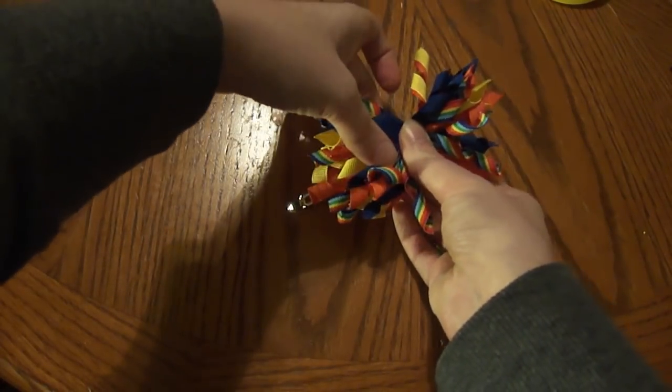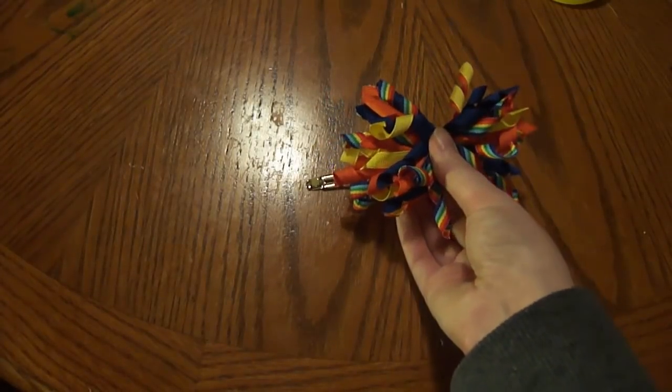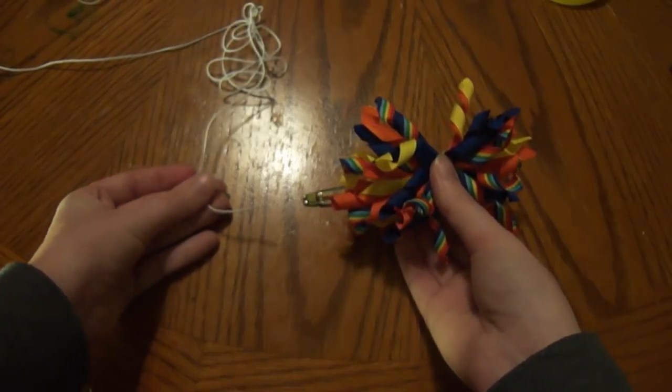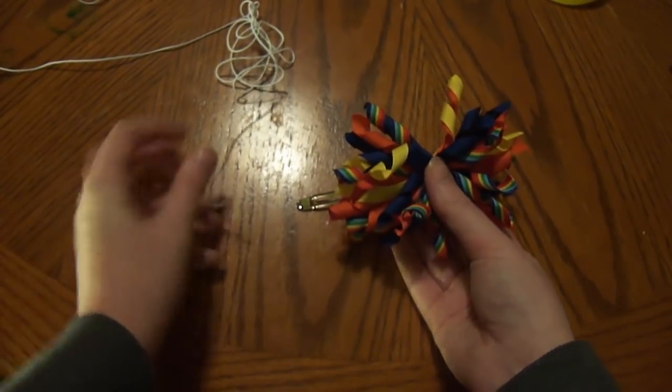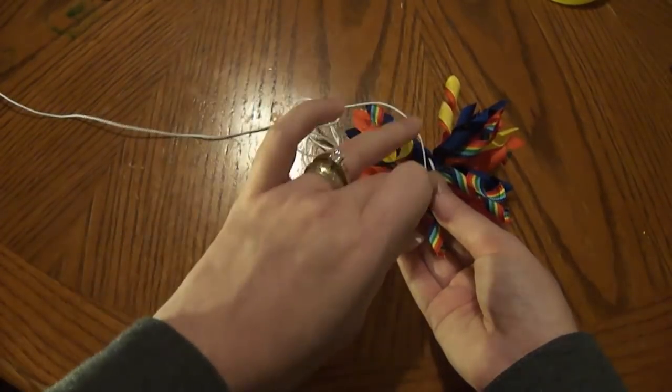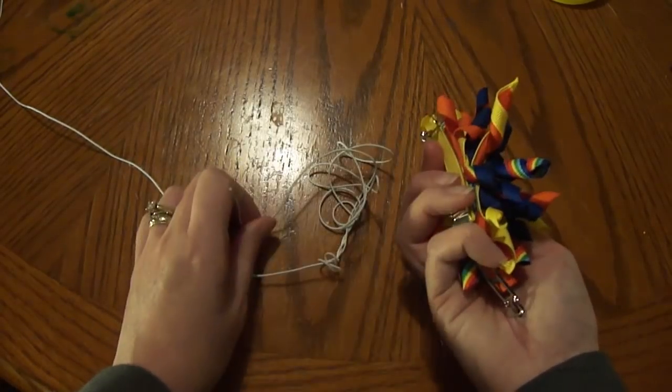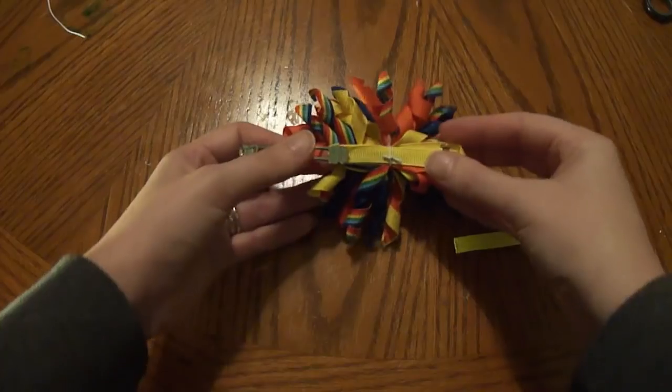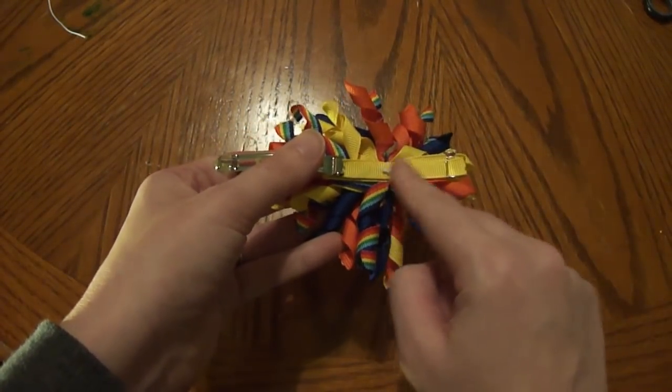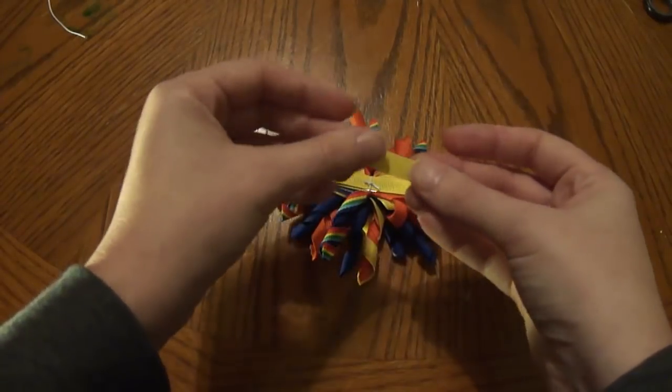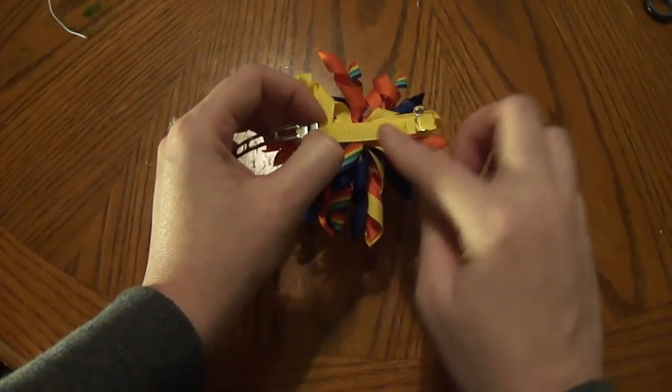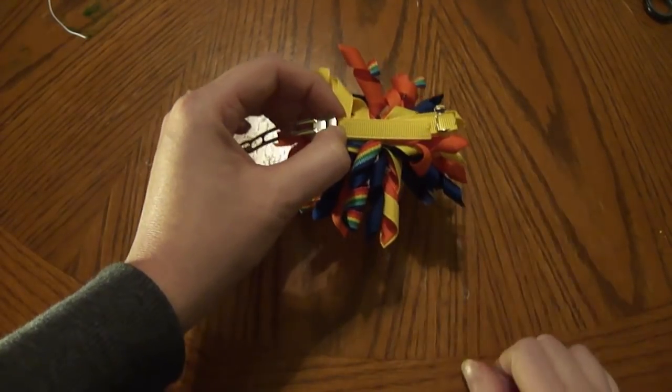Once it's secure, you're going to take your elastic. Or you can go out and buy some of the colored embroidery thread, some that will match your corker. And you're just going to wrap this around the corker and the barrette a few times. And then tie it off in the back. If you don't want to see this part right here, you can take a piece of ribbon, heat seal the ends, and just insert it on top and glue it in place. And then you'll never see that.